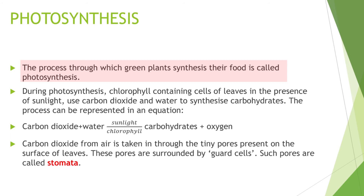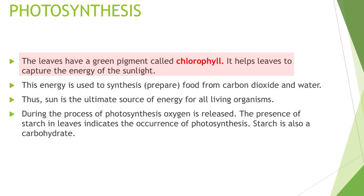The leaves have a green pigment called chlorophyll. It helps the leaves to capture the energy of sunlight. Every part of the plant — leaves, stems, roots, branches, fruits, flowers — has its own importance, but leaves are especially useful because they contain chlorophyll, the green pigment that gives leaves their green color and captures solar energy.